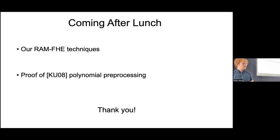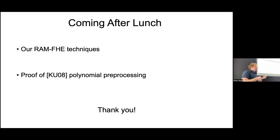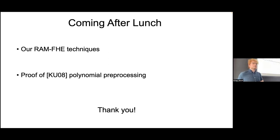There's a question about where the barrier is to making this practical — is it the polynomial preprocessing or the SHE part? You can kind of think of either — there are ideas to improve on either aspect. It's about how you tune parameters so they fit together. You can consider making adjustments on either side that could make the scheme fit better for practical parameters.